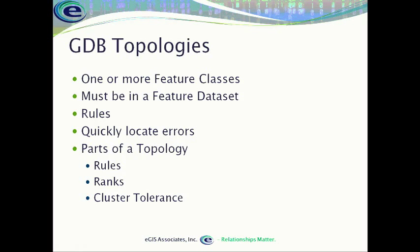In our topologies, we can assign one or more feature classes when we create a geodatabase topology. The key is that a topology has to be created inside of our feature dataset. That ensures that every feature class participating in that topology has a common spatial reference, because we're doing a spatial analysis of our data to make sure it meets our rules.